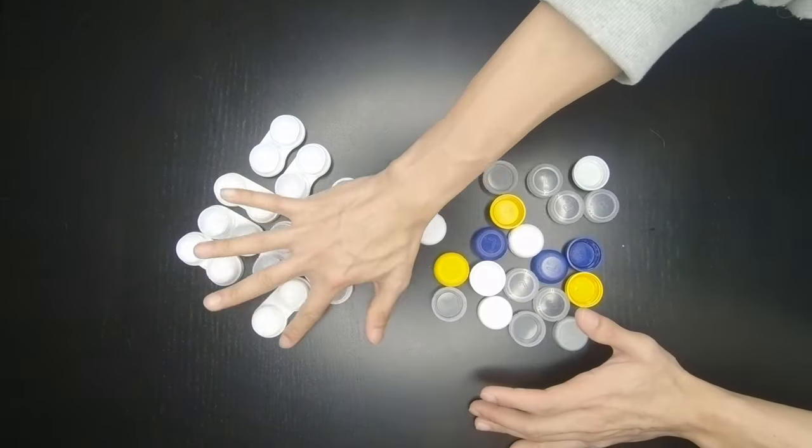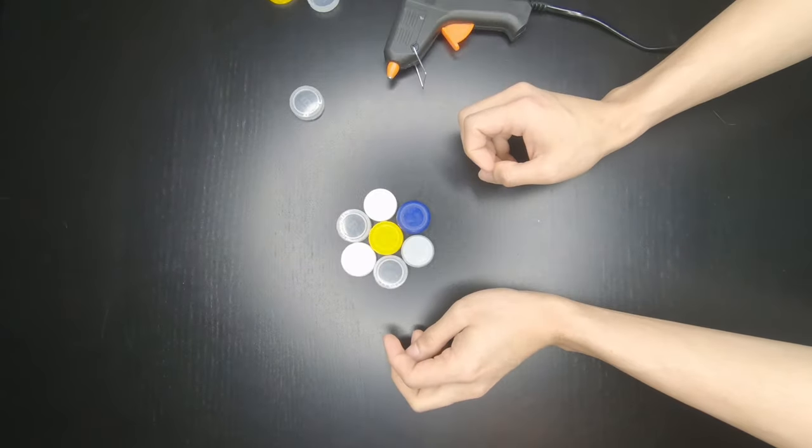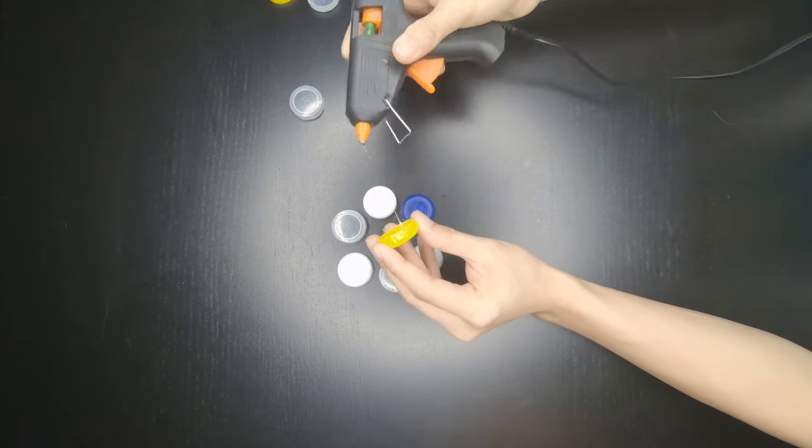First step is to form the base by gluing the contact lens container covers together using a glue gun.